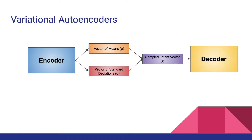As discussed in lecture, variational autoencoders consist of an encoder and decoder, in which the encoder represents the input data as a vector of means and standard deviations in the latent space. The decoder then uses the encoding to try and reconstruct the data. The loss consists of reconstruction loss for fidelity and KL divergence, which makes the latent space conducive to varied sampling.